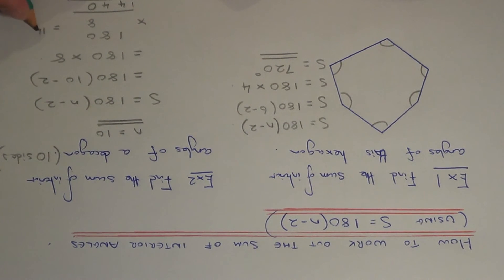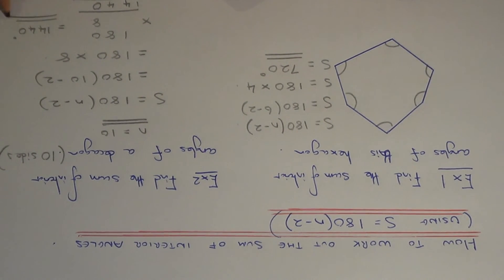So the sum of interior angles of a decagon is 1440 degrees. Thanks for watching.